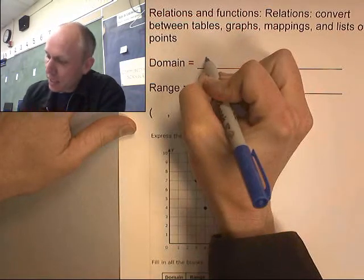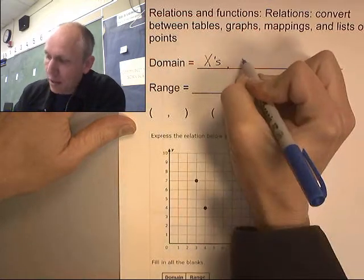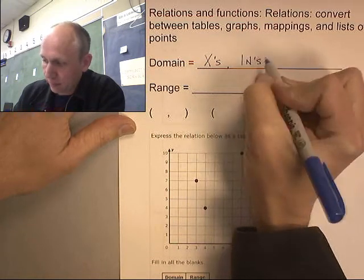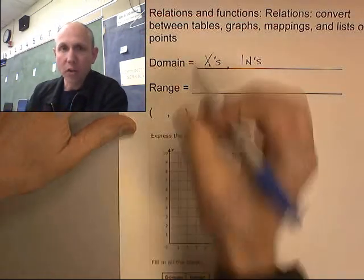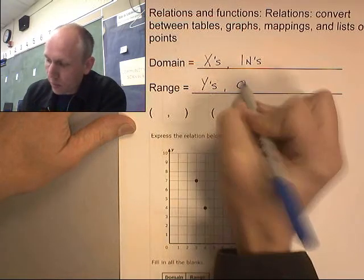The domain. The domain are the X's. They're the ins. Range, those are the Y's. Those are the outs.